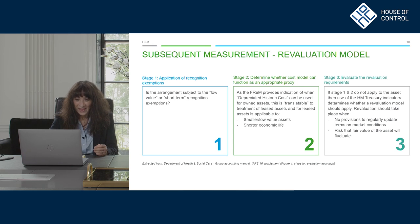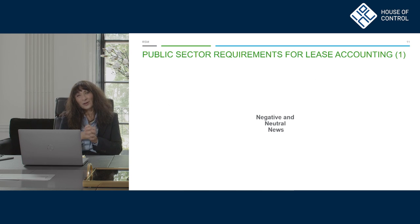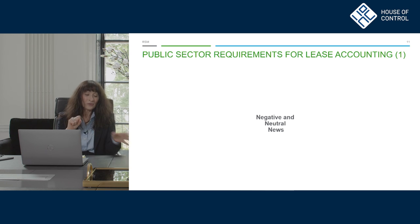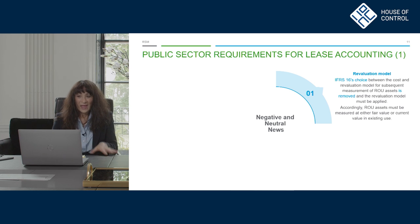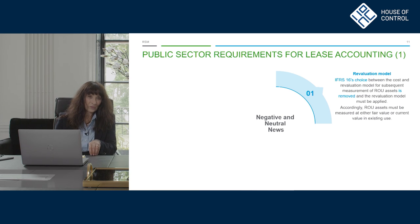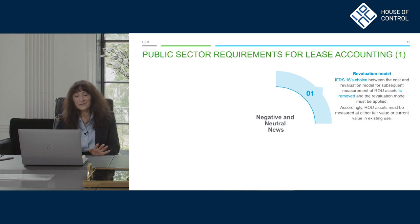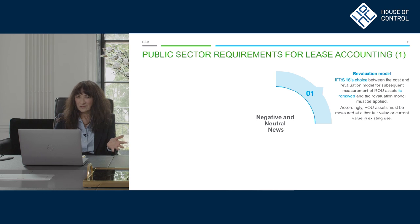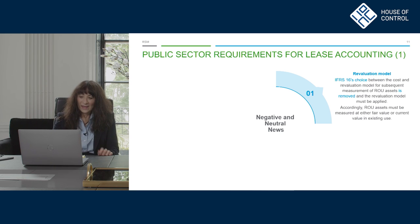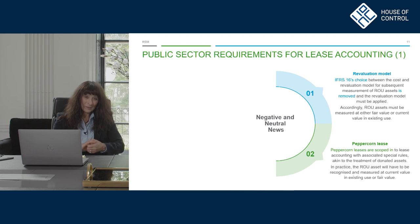Now we're going to look at some bad news, some neutral news, and then some good news — I like to finish this section with the good news, so I leave you with a smile. The first piece of bad news is that under the FReM, IFRS 16's choice of using cost or the revaluation model for the right-of-use asset is taken away — you're not allowed to use cost. However, as we've seen, there's a concession allowing depreciated historical cost for shorter-lived or lower-value assets, so it's really only the larger and specialist assets where you'll have to go to the revaluation basis.